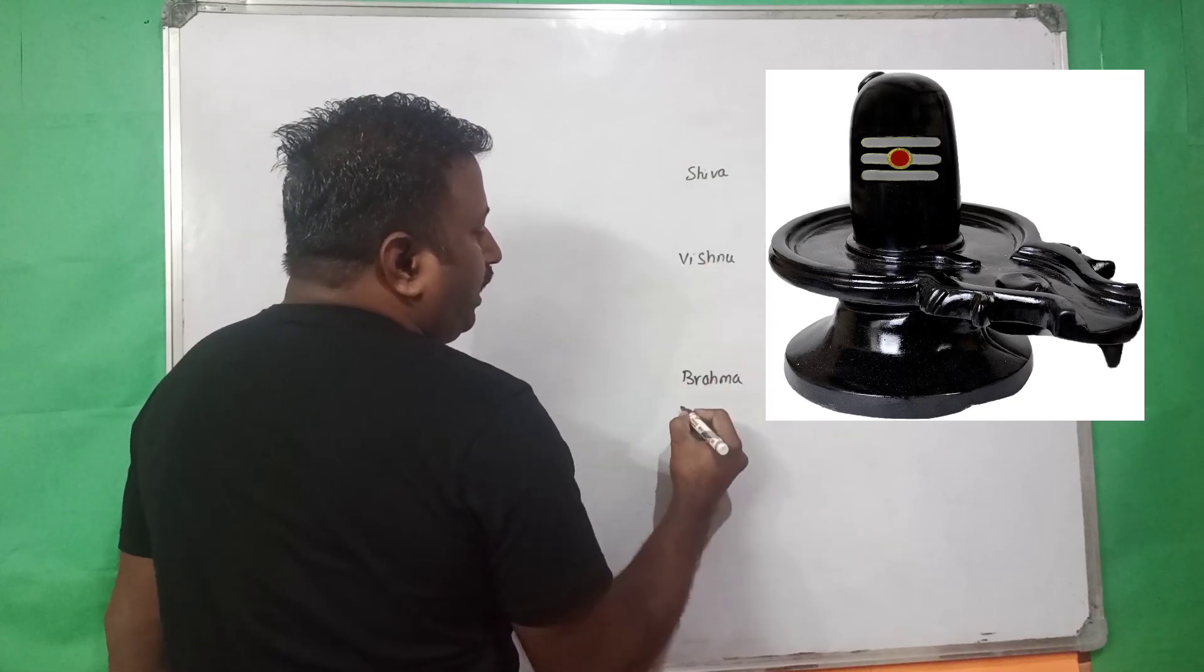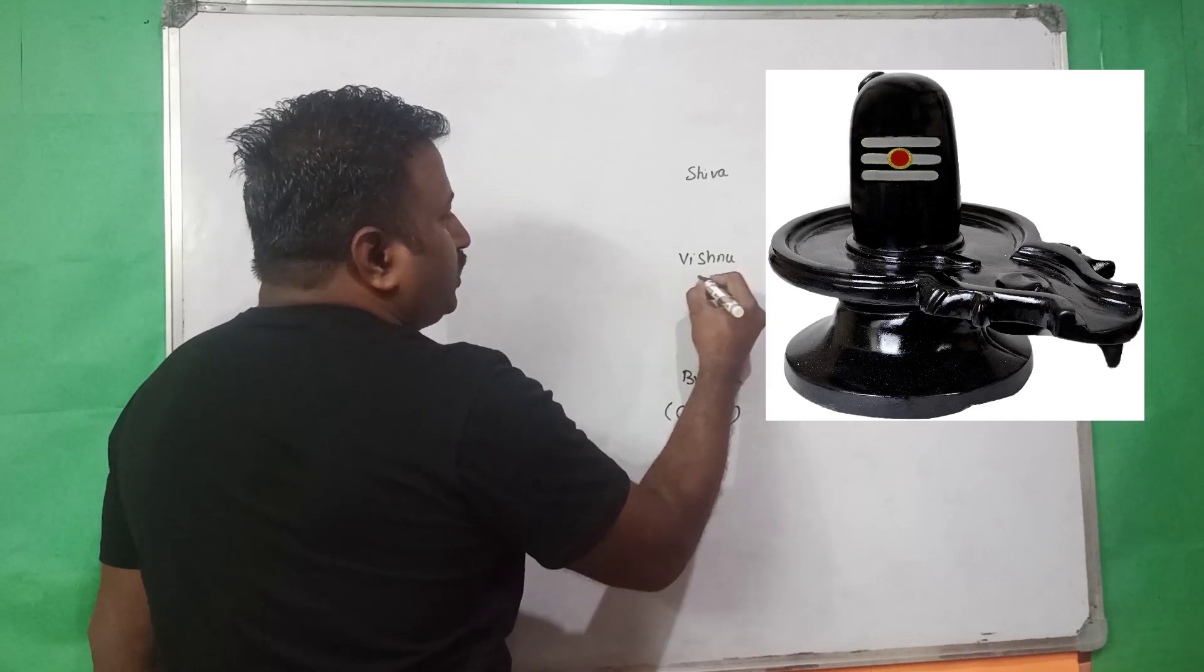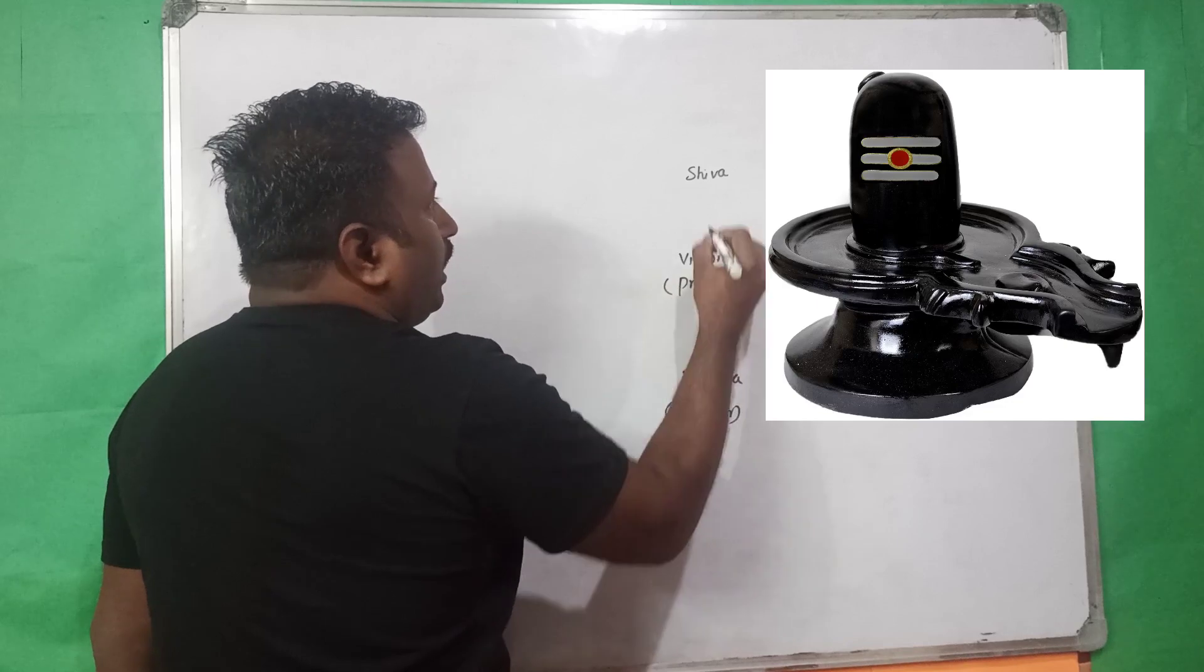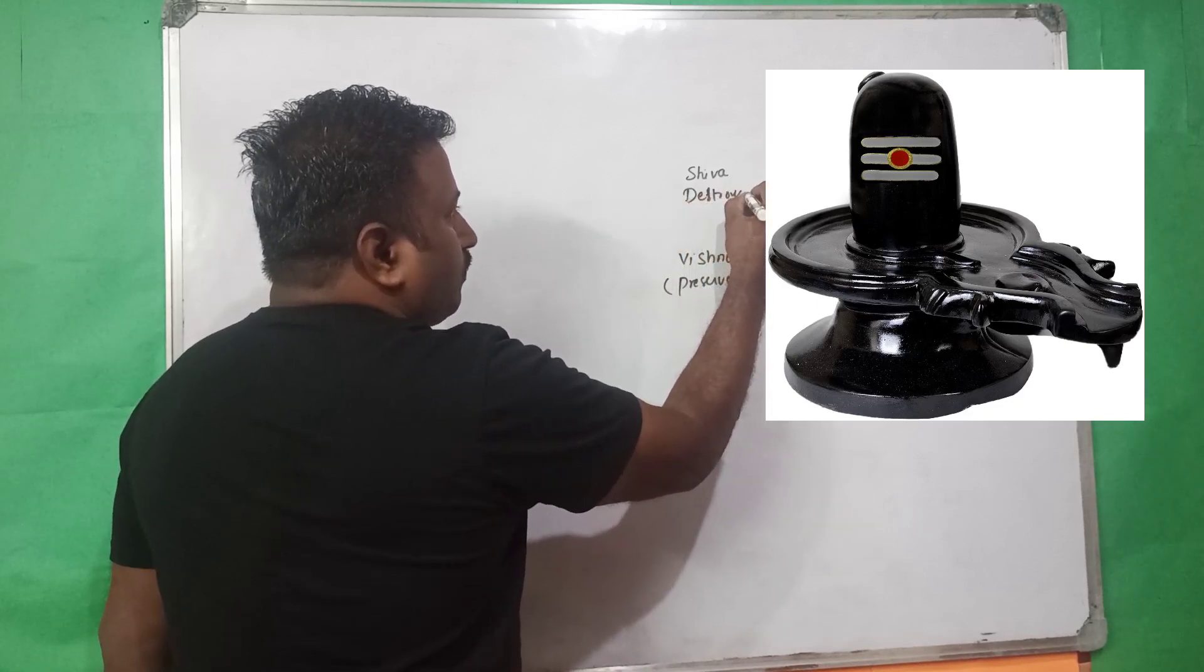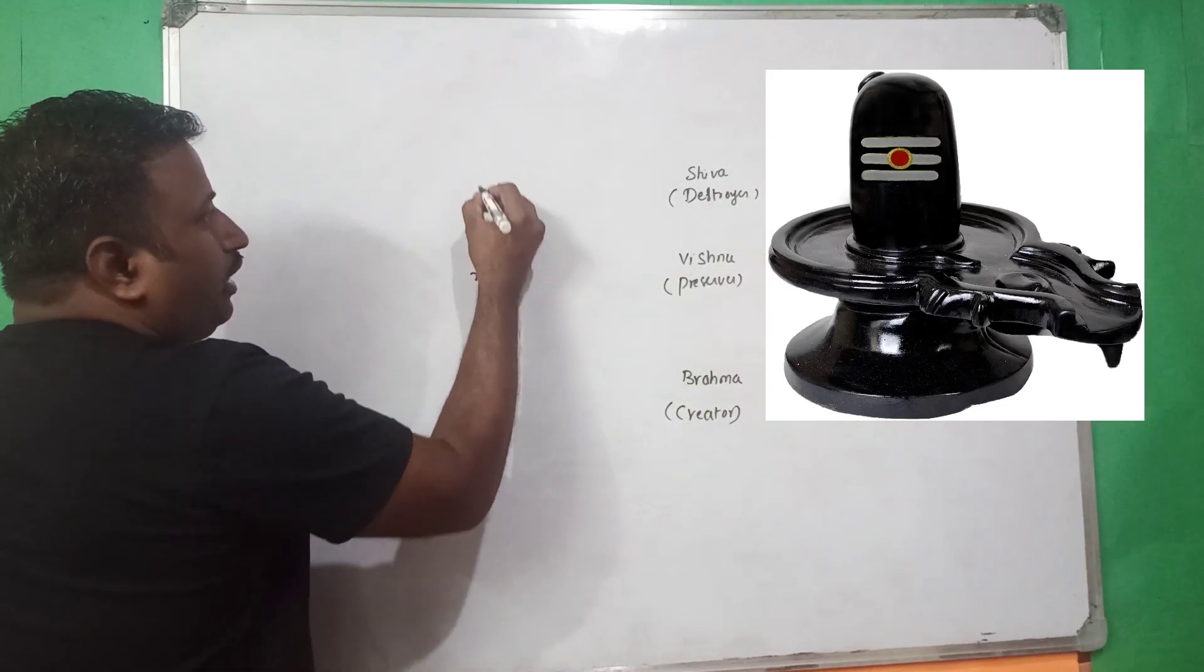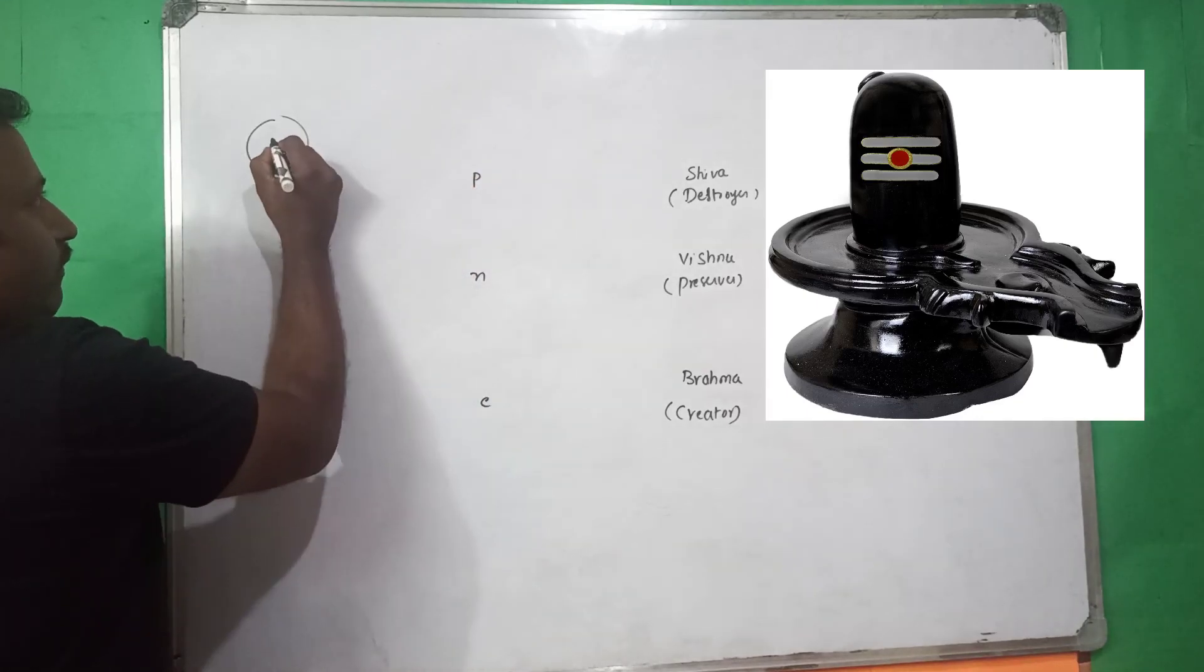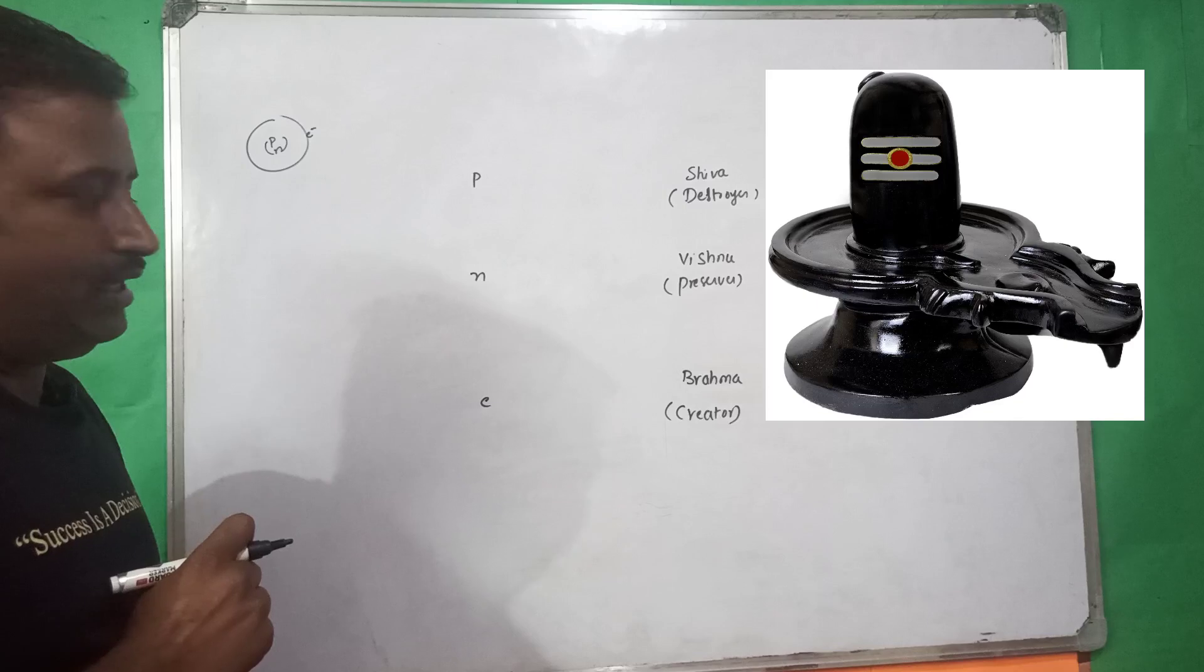Here, Brahma is a creator, Vishnu is a preserver, and Shiva is a destroyer. As like electron, neutron and proton in an atom. If you take atom, we have proton and neutron in the nucleus, electron around the nucleus.